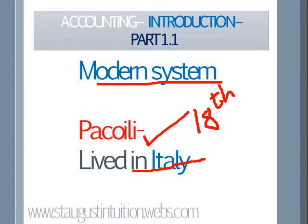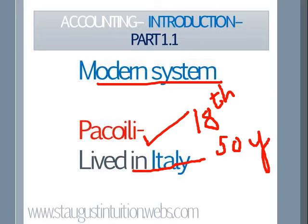In those early days, business organizations and transactions were not so complex, because businesses were small and easily manageable by the proprietor himself. Things have changed during the last 50 years. The advent of the industrial revolution has resulted in large-scale production. Competition increased, markets widened, the area and scope of the market increased, and this has reduced the effectiveness of personal supervision.